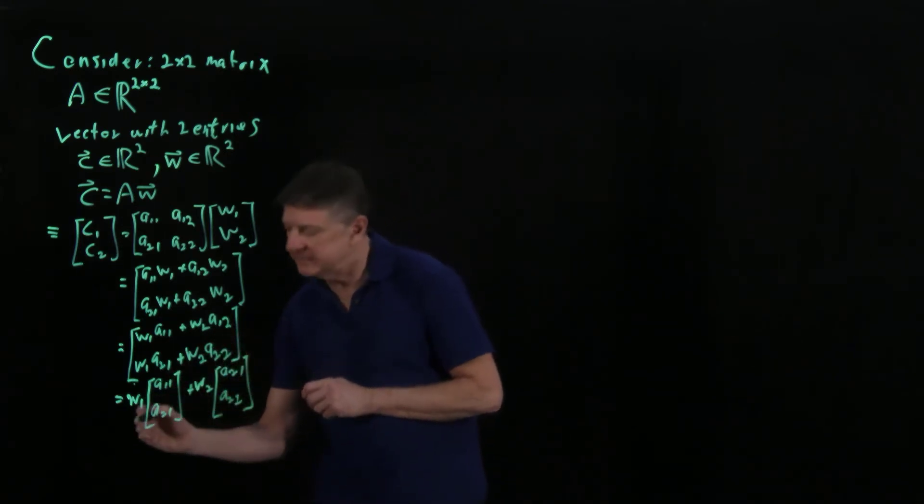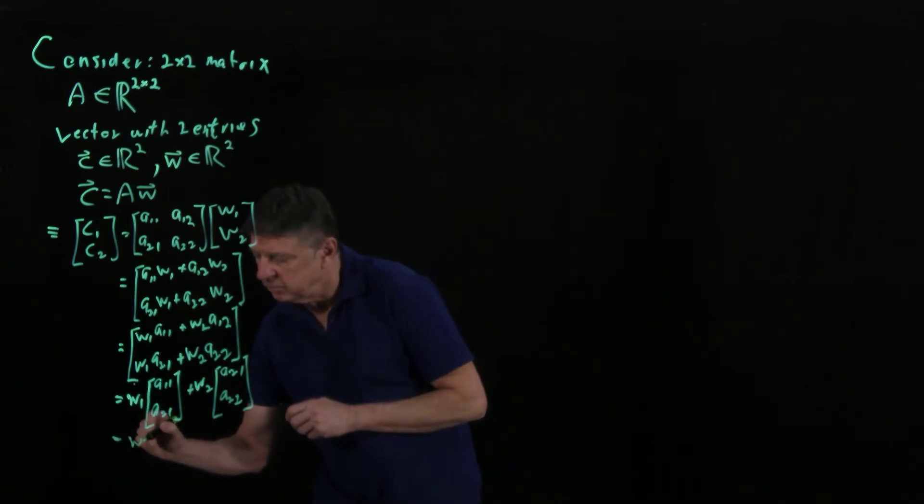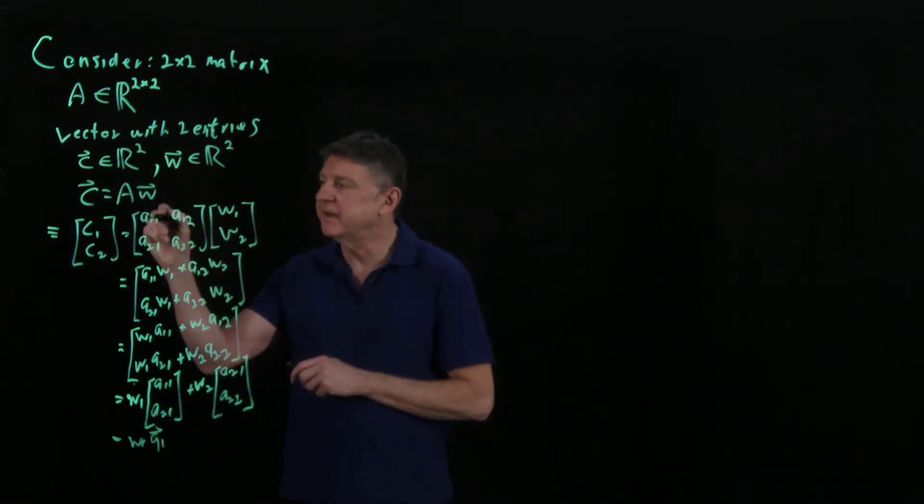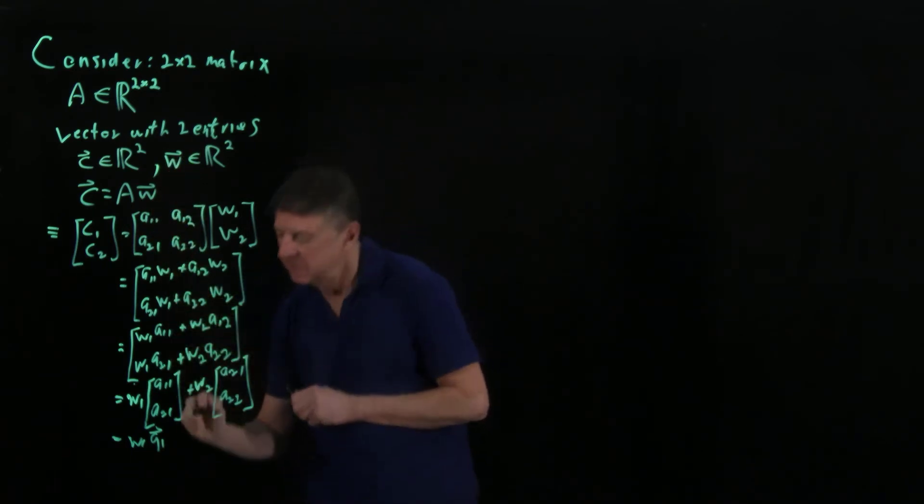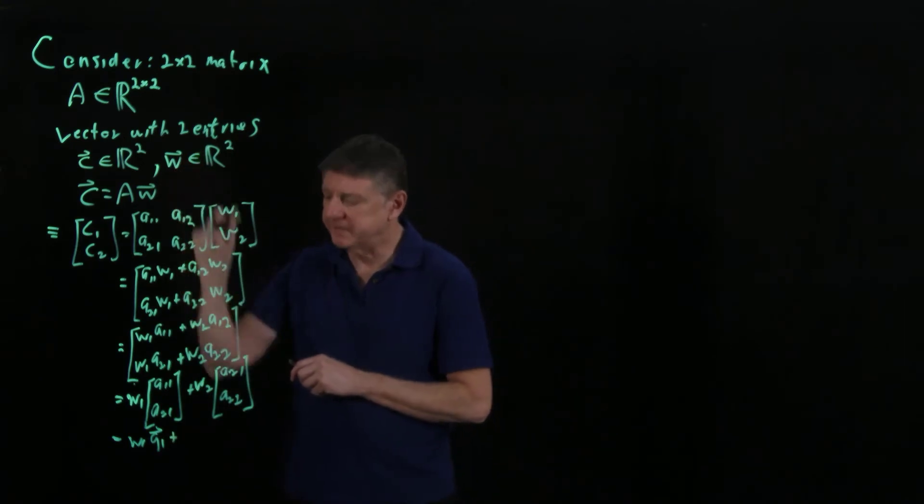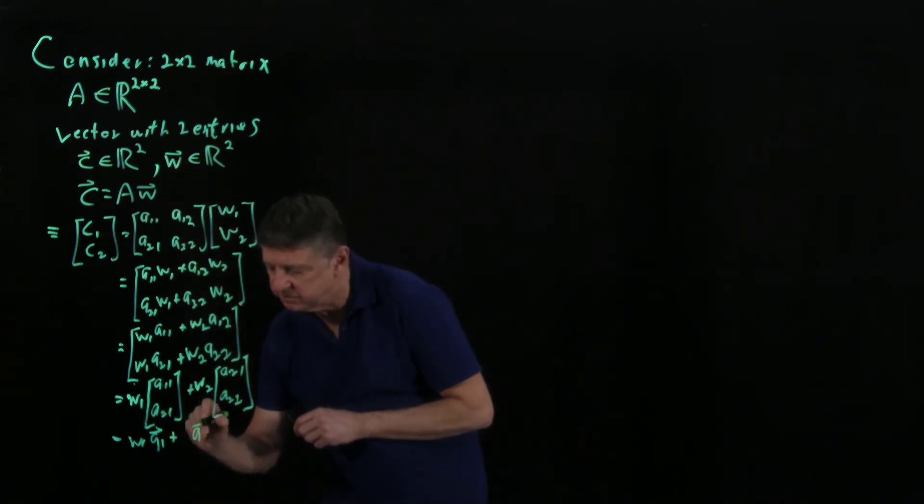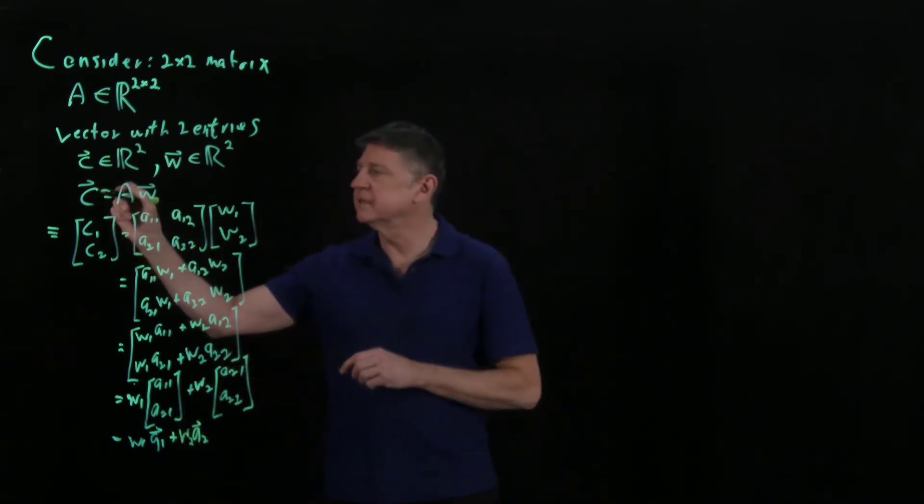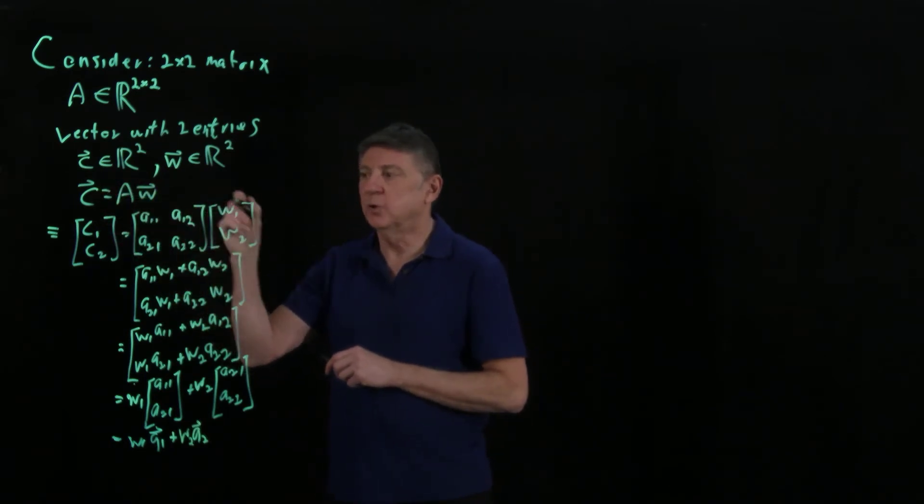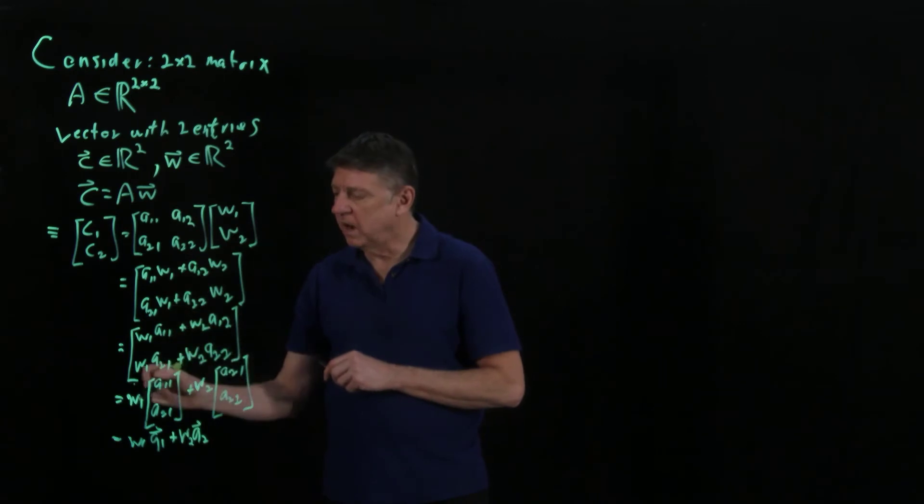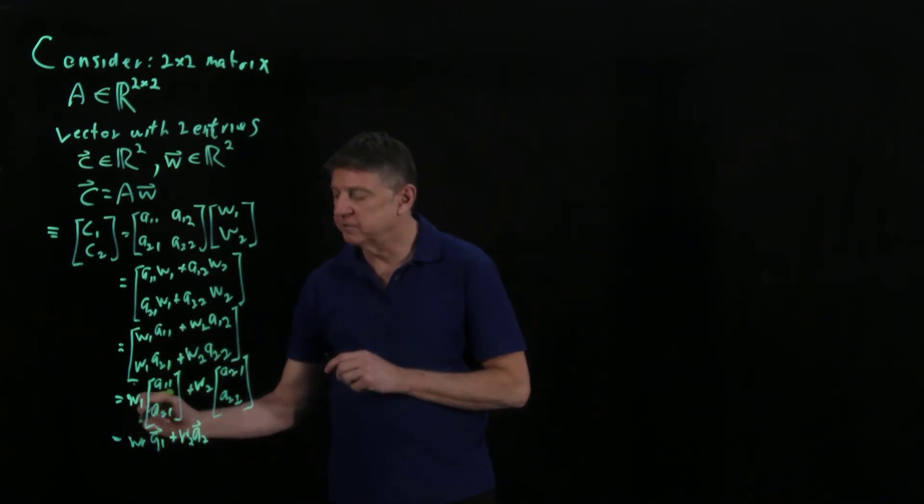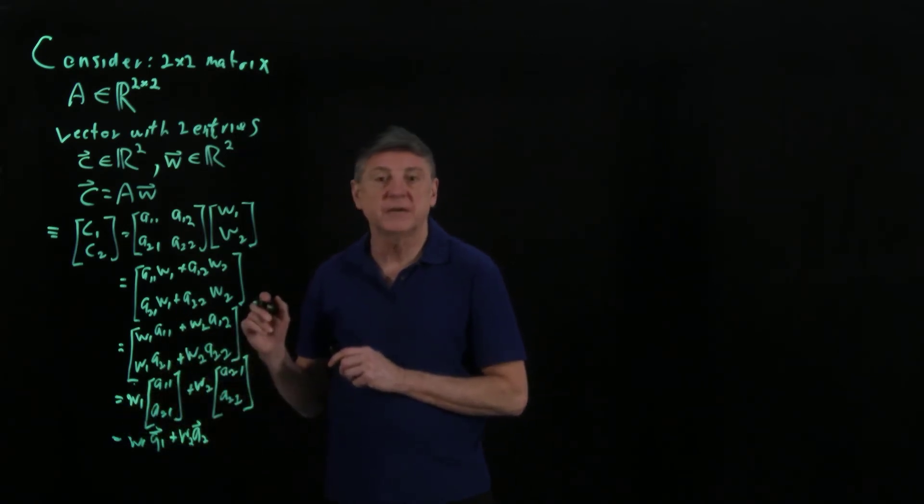And so I can write this as W1 times, and I could say I could take the data in this vector, and I could look at this first column as being a vector itself. And then likewise, I can take the second column of this vector, and I can treat that as a vector A2, and I can say that that's multiplied by W2. So I can represent this vector C as I could go all the way down to the entries, or I could say that it's a one entry times a vector of entries, or I could treat it as a linear combination of vectors.